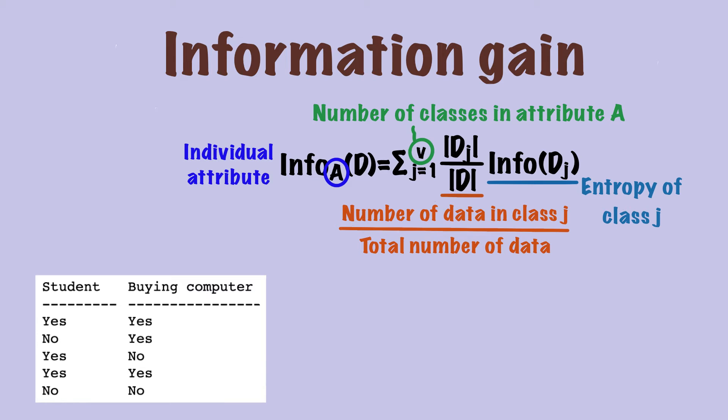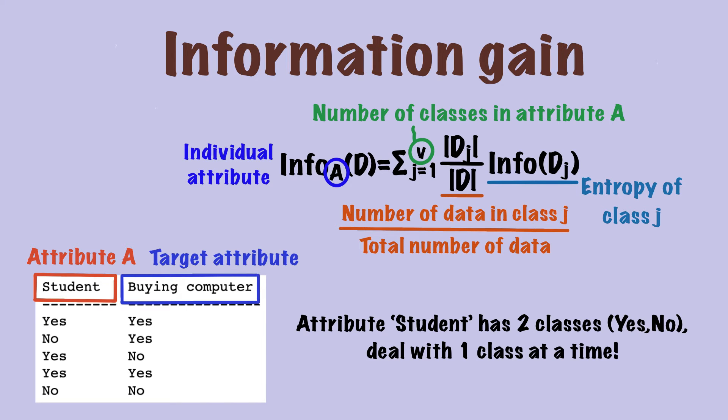See, we have this database with five data points. The attribute A is whether a person is a student or not. The target attribute is whether a person buys a computer. Therefore, attribute A has two classes, so v in the formula is 2. But we will deal with one class at a time.